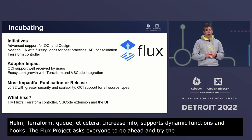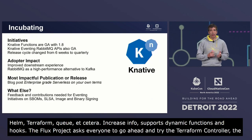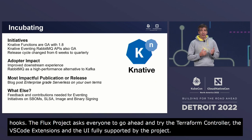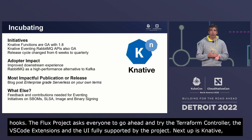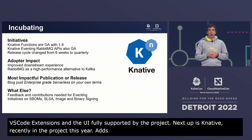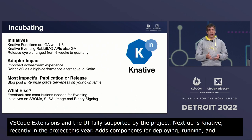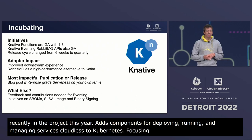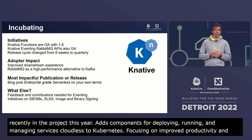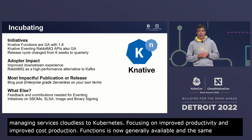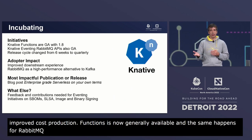Next up we have Knative, recently accepted into incubation earlier this year. It's a project that adds components for deploying, running, and managing serverless cloud native applications on Kubernetes, focusing on improved productivity and operational cost reduction. With Knative 1.8, Functions is now generally available, and the same happens for RabbitMQ APIs for broker and source. Knative is also moving from a six-week release cycle to quarterly releases.